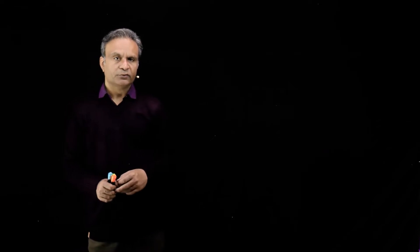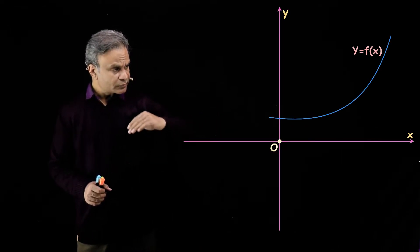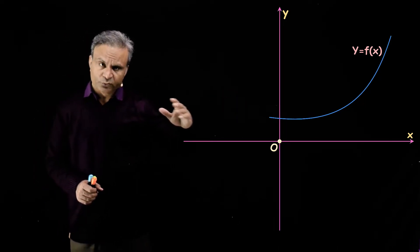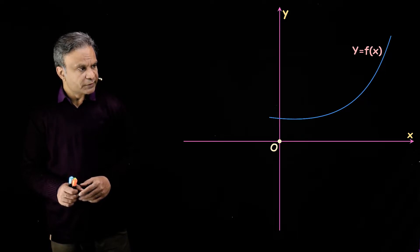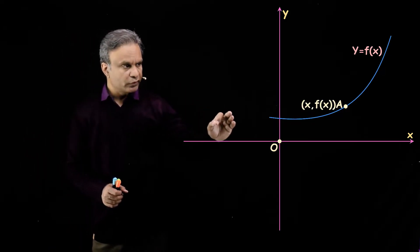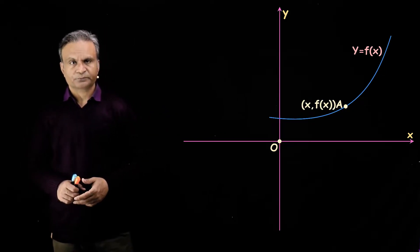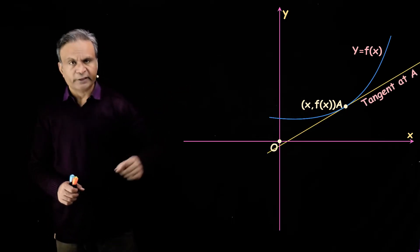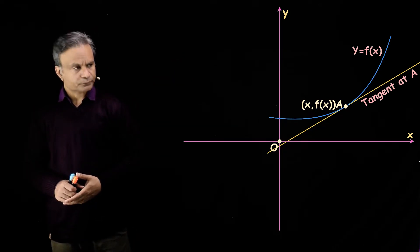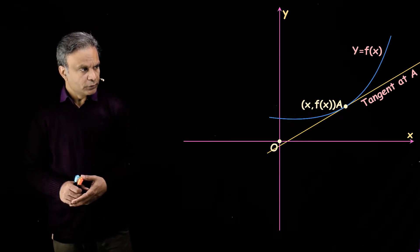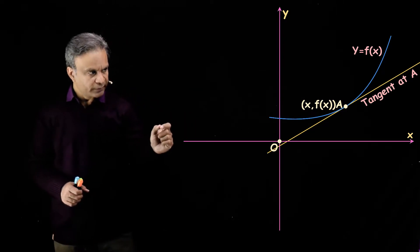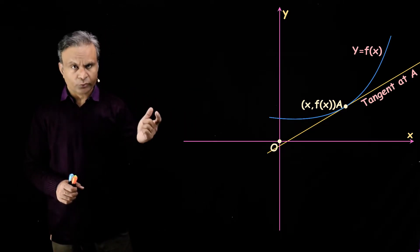Now consider a continuous function y = f(x) having this graph. This graph is smooth at each point — har ek point pe jo graph hai wo smooth hai. Now consider one fixed point a having coordinates (x, f(x)). We draw a tangent to the curve at point a. This is the tangent line, and we can draw a unique tangent at point a — kisibhi point pe tangent line unique hoti hai.